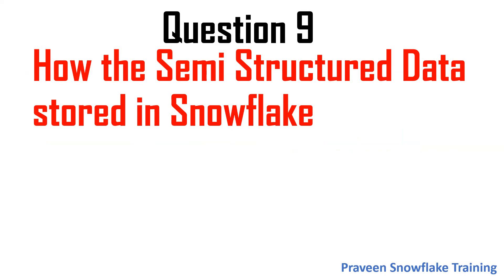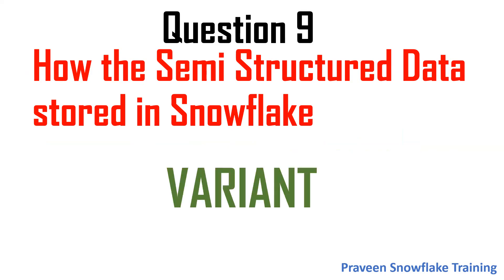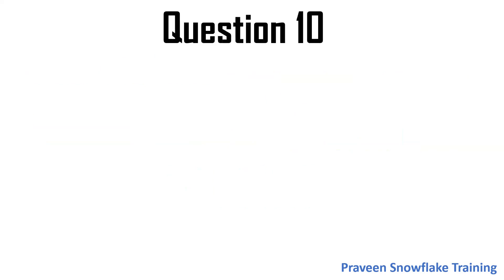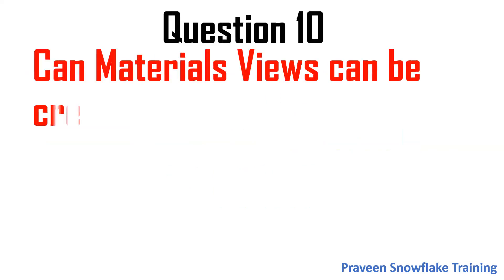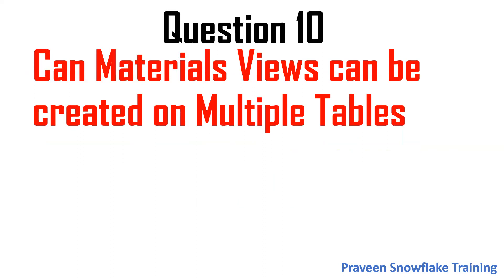The ninth question is: how is semi-structured data stored in Snowflake? Semi-structured data formats like JSON, XML, Avro, Parquet, and ORC can be stored in Snowflake using the VARIANT data type. Structured data like CSV or text files uses regular columns, while semi-structured data uses VARIANT.